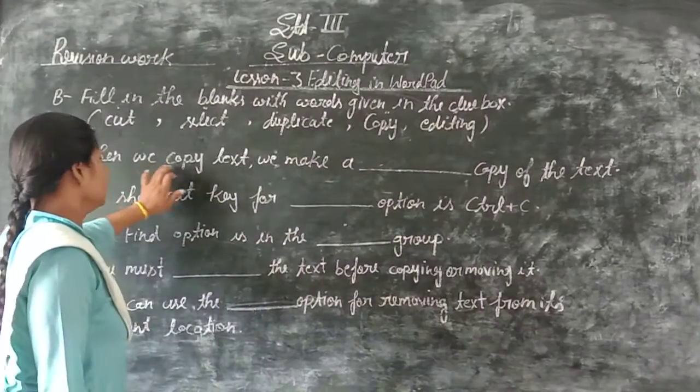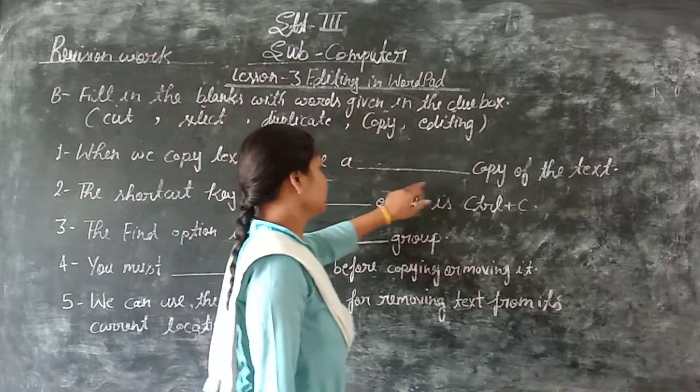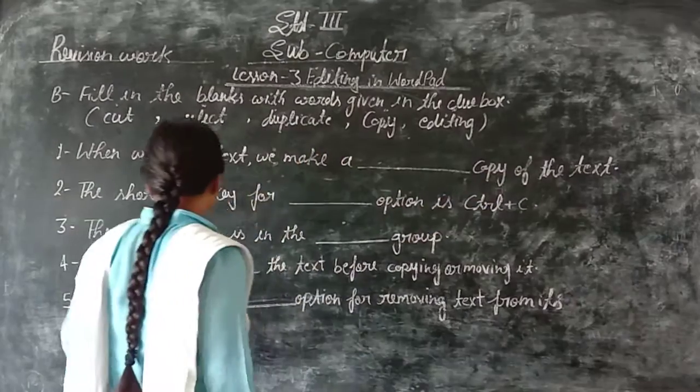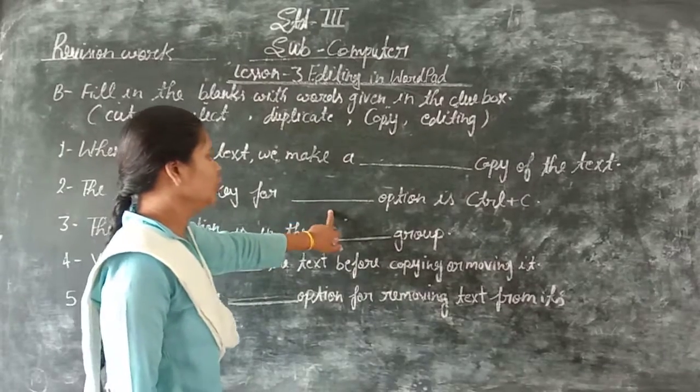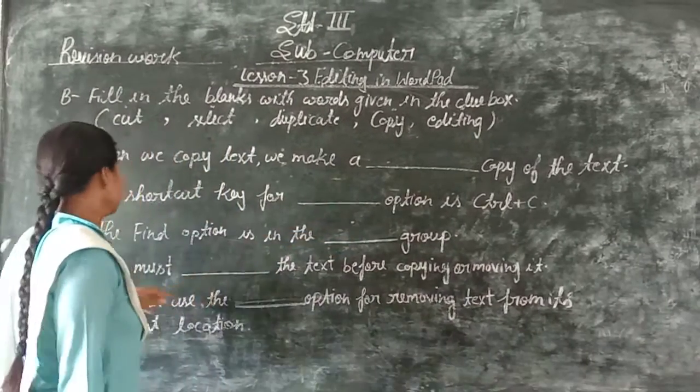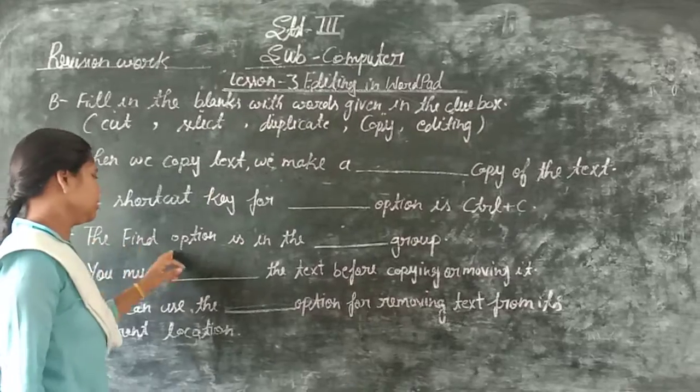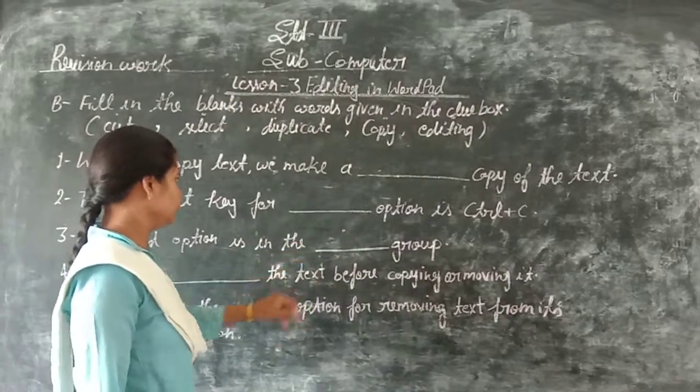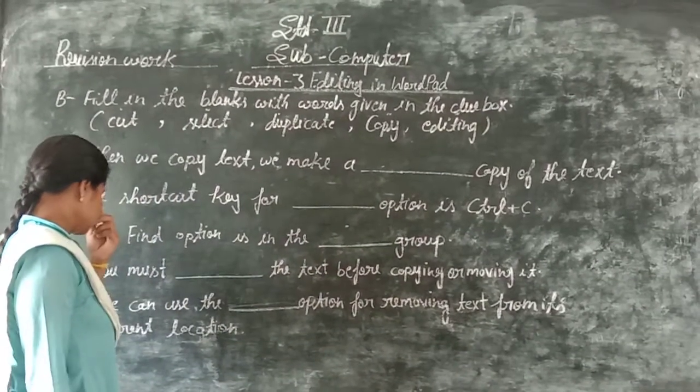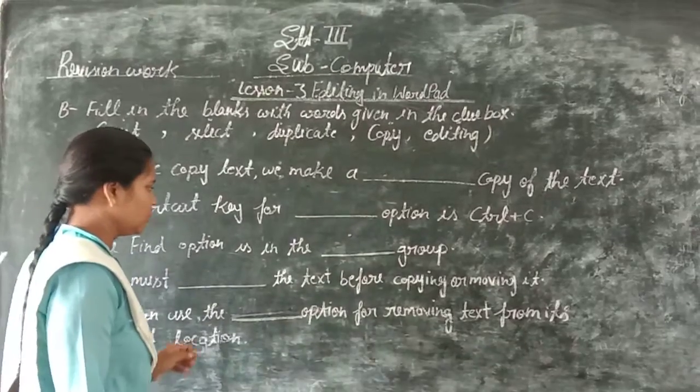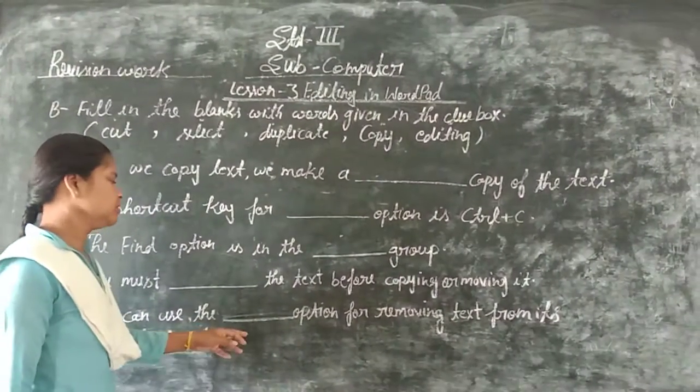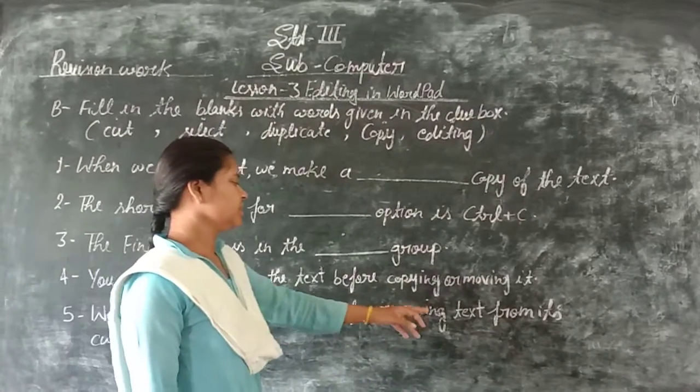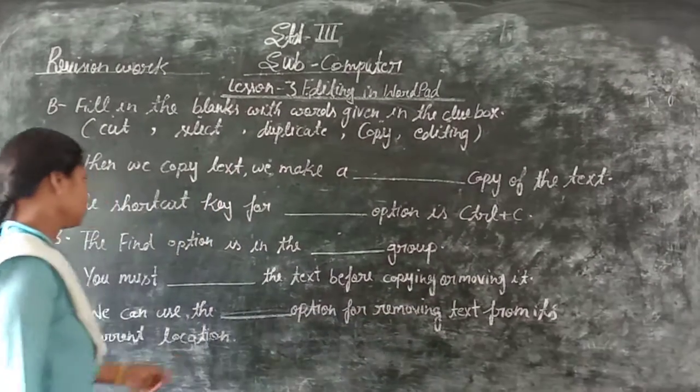First, when we copy text, we make a duplicate copy of the text. Second, the shortcut key for the copy option is Control+C. Third, the find option is in the editing group. Fourth, you must select the text before copying or moving it. Fifth, we can use the cut option for removing text from its current location.